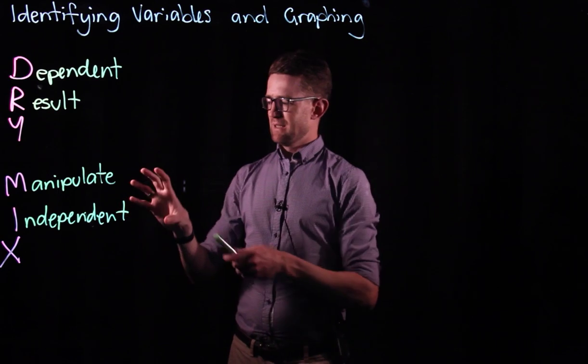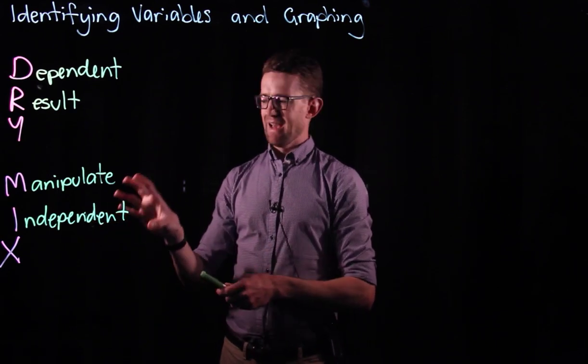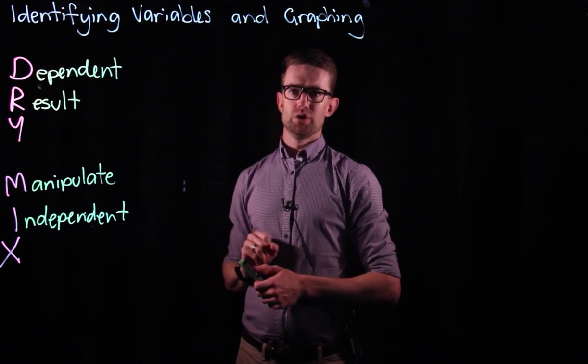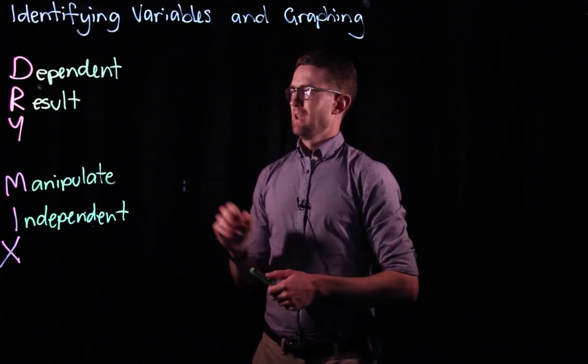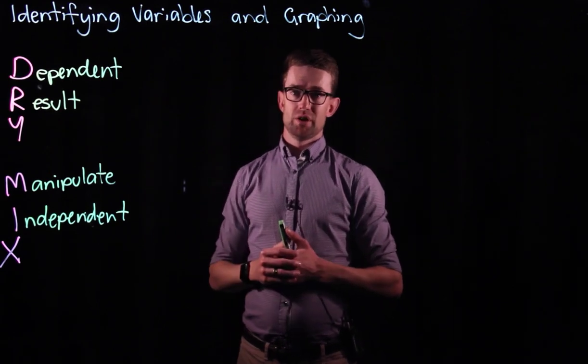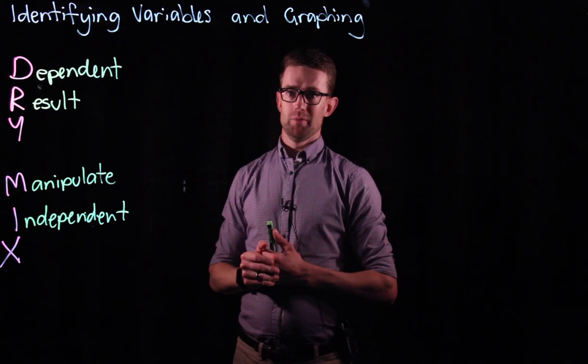Something for you to bear in mind is the independent variable is the one that you know the values because you decide what you're going to set them to. And the dependent variable is the one that you don't know what the values are going to be until you actually complete the experiment.